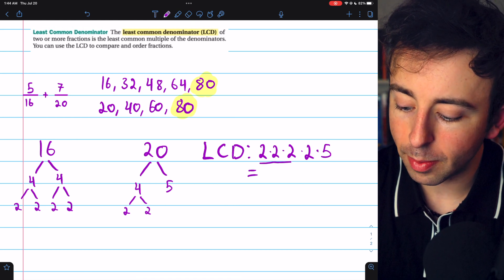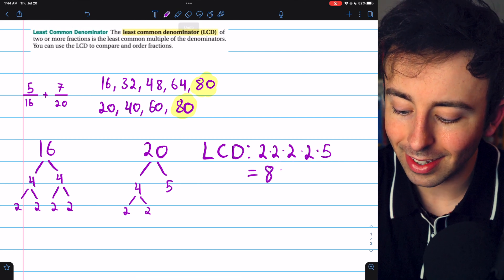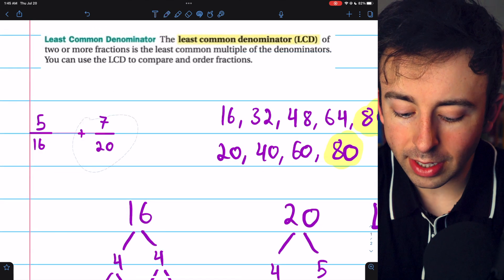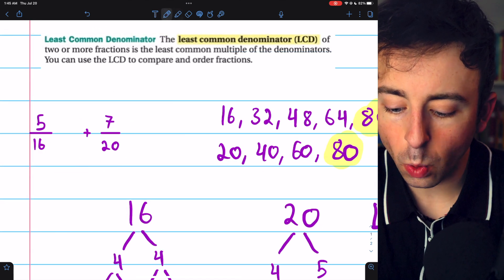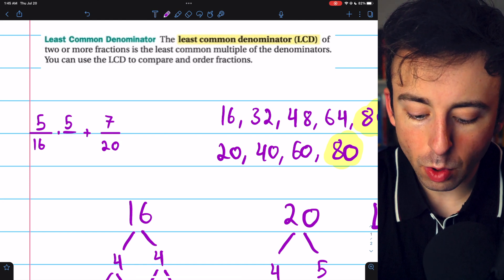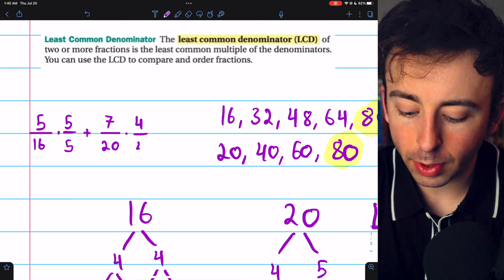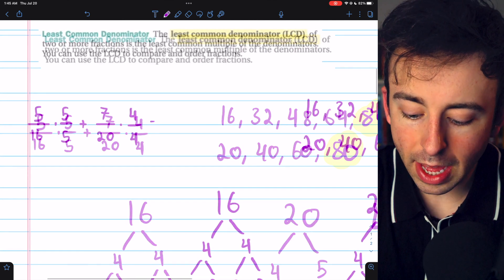2 times 2 times 2 times 2 is 16. Times 5 is 80, just as we thought. 16 goes into 80 5 times, and 20 goes into 80 4 times. So the fraction on the left, we multiply by 5 over 5, and the fraction on the right, we multiply by 4 over 4.